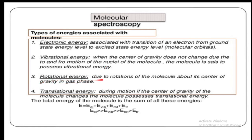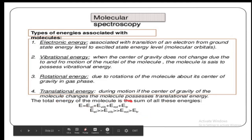Rotational energy is due to the rotation of the molecule about its center of gravity in the gas phase, and there are rotational energy levels in the molecule. Translational energy occurs when the center of gravity of the molecule changes during motion. The total energy of the molecule is the sum of all these energies: E = E_electronic + E_vibrational + E_rotational + E_translational, where E_electronic > E_vibrational > E_rotational > E_translational.